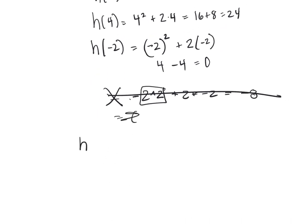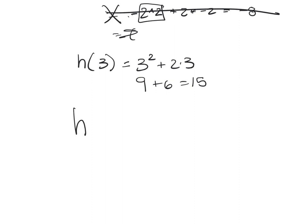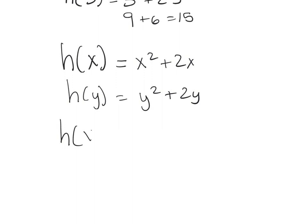So what is h of 3? It would be 3 squared plus 2 times 3 which is 9 plus 6 or 15. What's h of x? Wherever I see a p I'm going to put an x, so it would be x squared plus 2x. What's h of y? That would be y squared plus 2y. What's h of x plus y? That would be (x plus y) squared plus 2 times (x plus y).